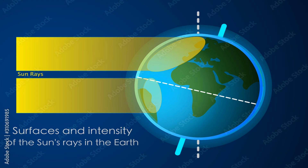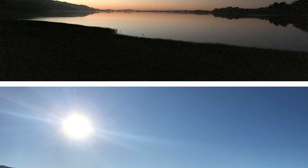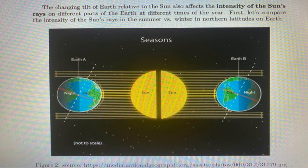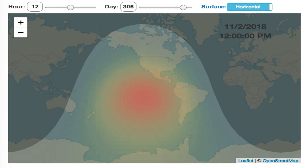During summer, when a hemisphere is tilted towards the sun, sunlight arrives at a more direct angle, resulting in higher intensity. This leads to warmer temperatures and the vibrant growth of vegetation. In contrast, during winter, when a hemisphere is tilted away from the sun, sunlight arrives at a shallow angle, resulting in lower intensity. This leads to cooler temperatures and the dormancy of plant life. The varying intensity of sunlight is a significant factor in shaping the unique characteristics of each season.